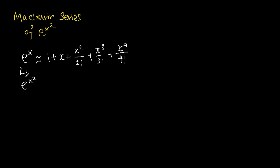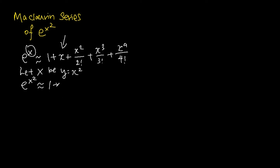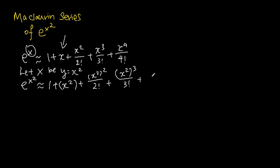We do this by letting x be a variable y which is equivalent to x squared. So e to the power of x squared can be approximated by substituting x squared in place of x in the Maclaurin series of e to the power of x. This gives us 1 plus x squared plus x squared to the power of 2 over 2 factorial plus x squared to the power of 3 over 3 factorial plus x squared to the power of 4 over 4 factorial.